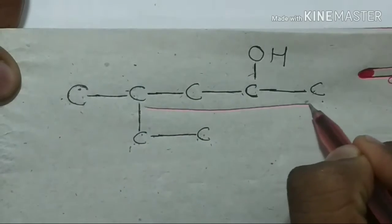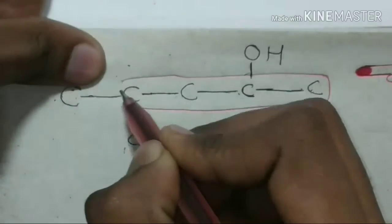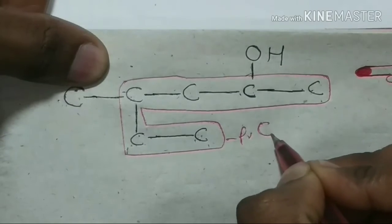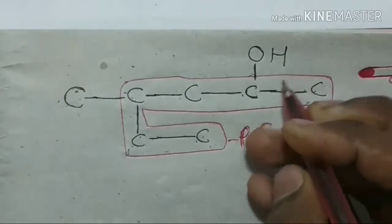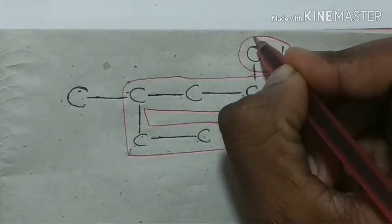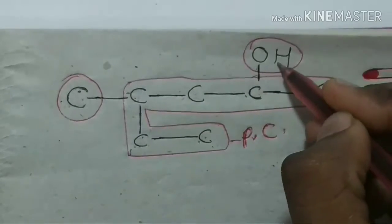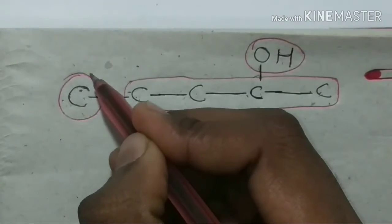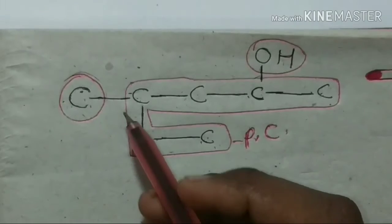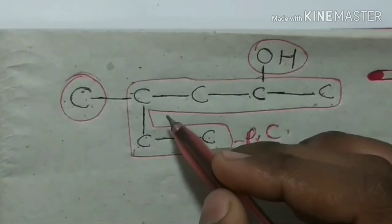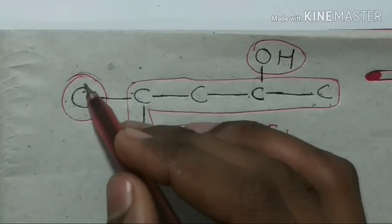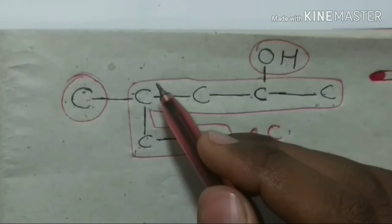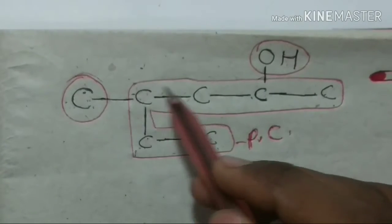We need to take the principal chain. We need to change to the principal chain so that we can identify it correctly — this is our principal chain. We have to take the principal chain and identify the substituent. The substituent here is a methyl group, and the remaining carbons with their hydrogen balances are accounted for.